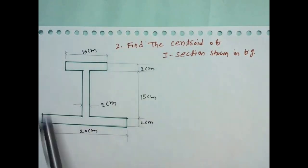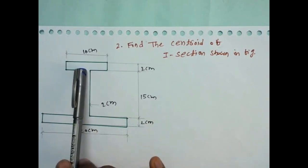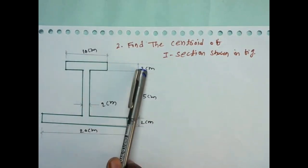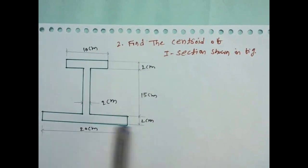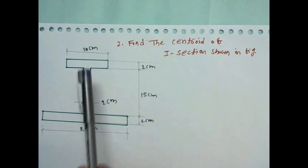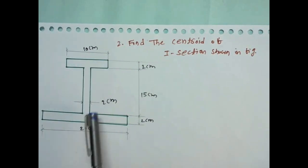This is the given figure. This one is called the top flange of dimensions 10 by 2. And this is the bottom flange of dimensions 20 by 2. And this is the web connecting the top flange and bottom flange, 2 by 15.